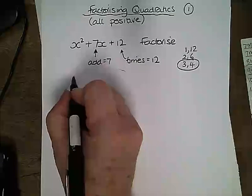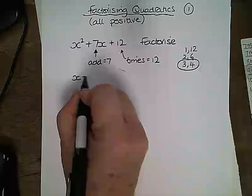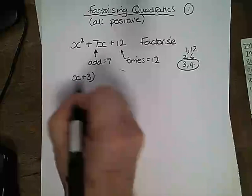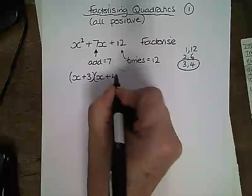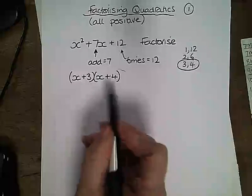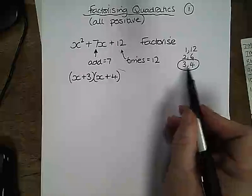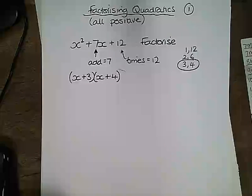So our factorised expression becomes x plus 3, x plus 4. The pluses are because these are both positive and that is how you factorise a quadratic expression.